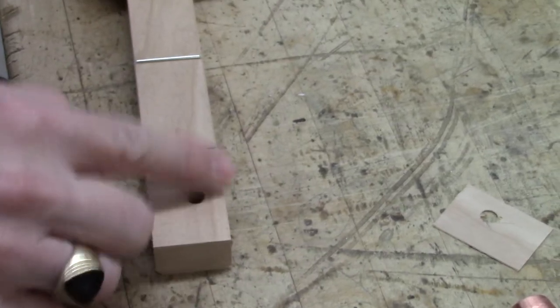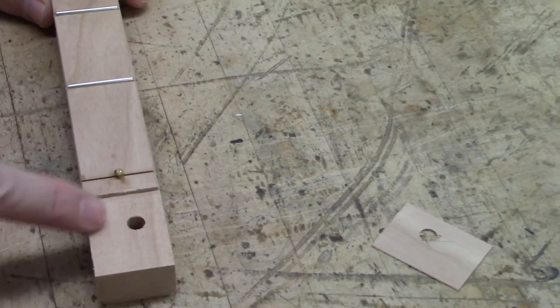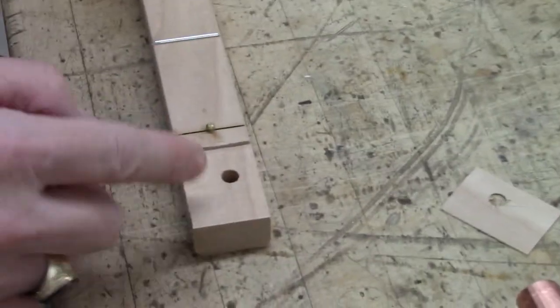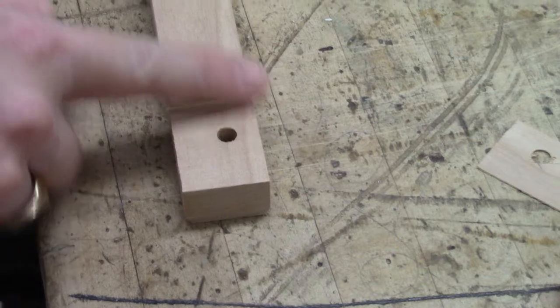Now, you will need to sand that so it's prettier. Because this face, of course, is very rough from the bandsaw. And then you want to put some kind of little chamfer on that. Just carefully sand that.